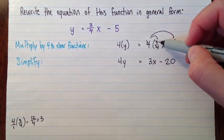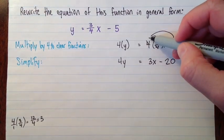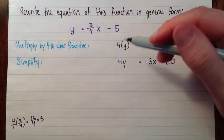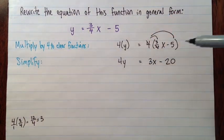Maybe I shouldn't have crossed out that 4 there. Because if you cross it out, you might forget to do 4 times negative 5. So we have 4y equals 3x minus 20.